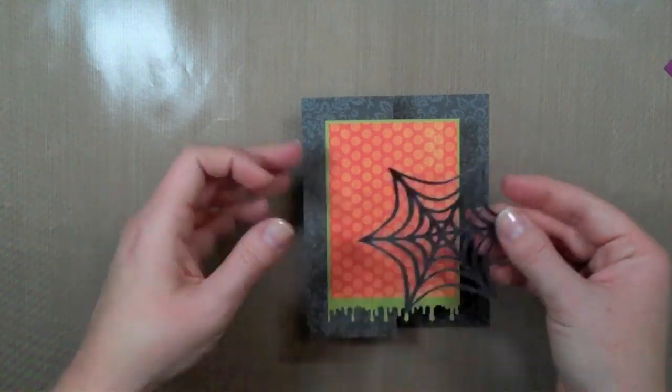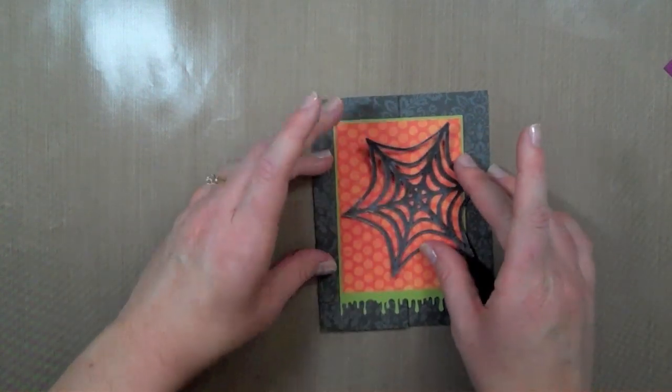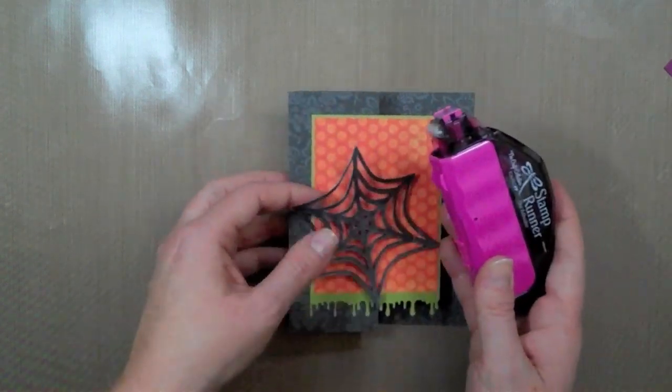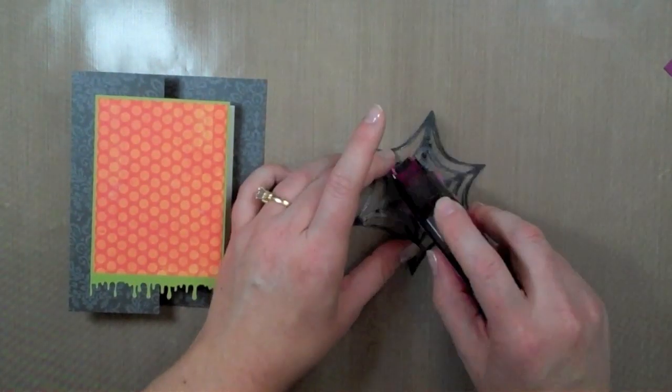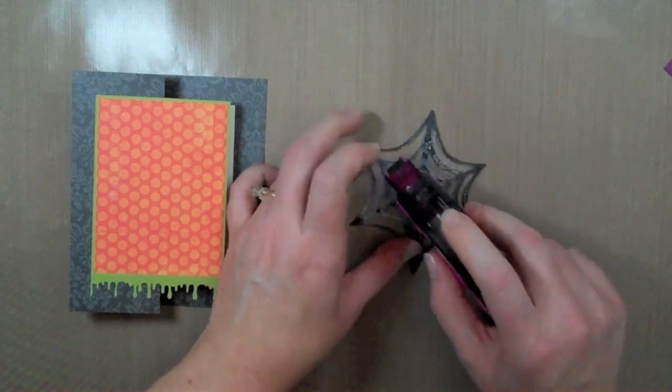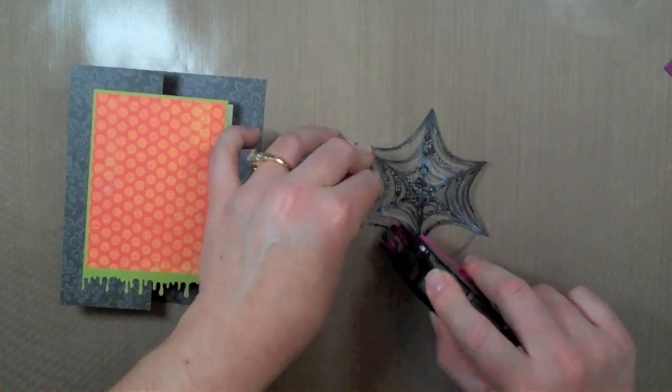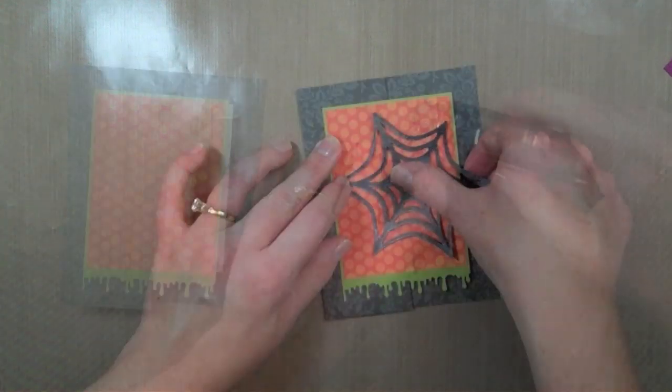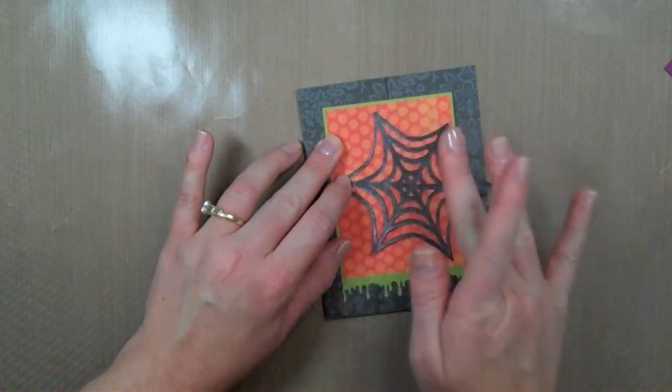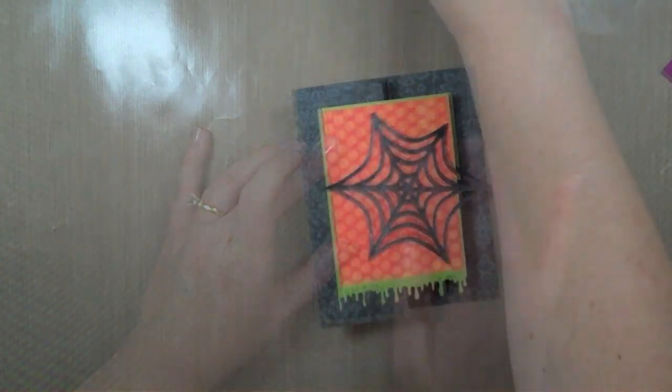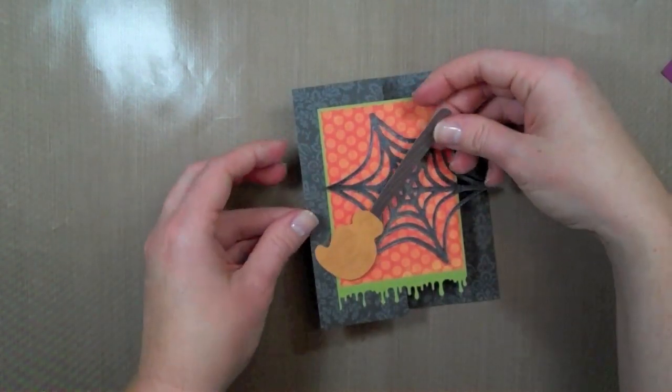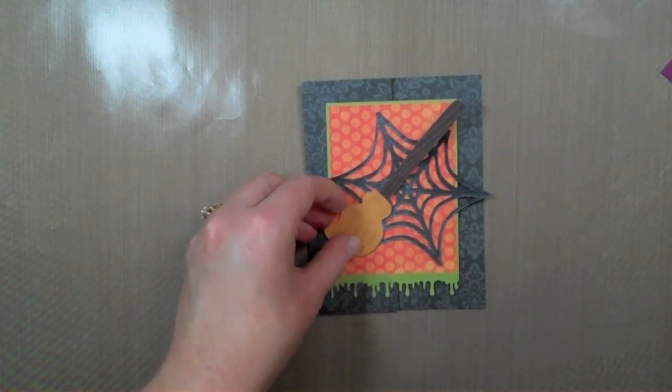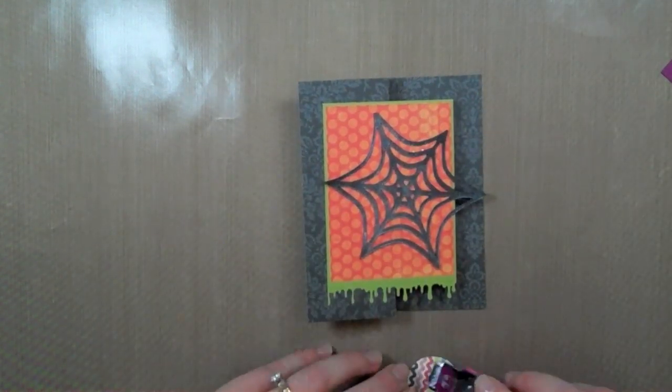And then I can start layering this up so here's my spiderweb and it's ok to me that it hangs off a little bit I kind of like that just adds a little more dimension and I am just going right over this with some adhesive here just like that. And the next piece that's going to go on is my broom here and I am going to have it coming across kind of hanging off like that.